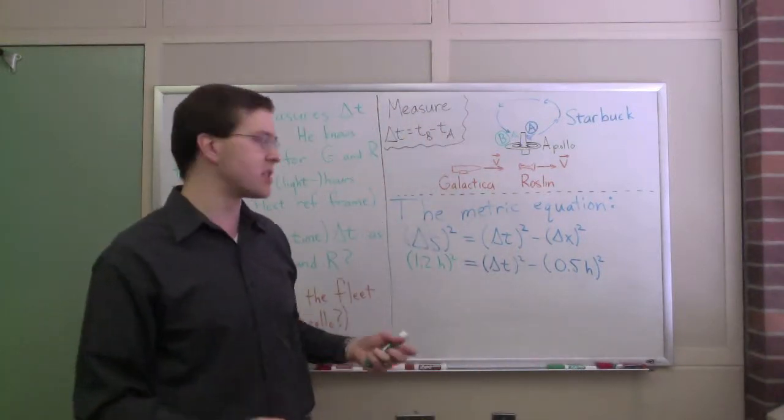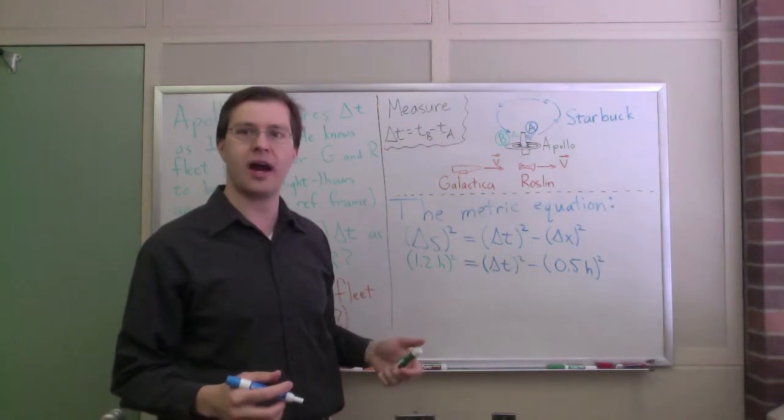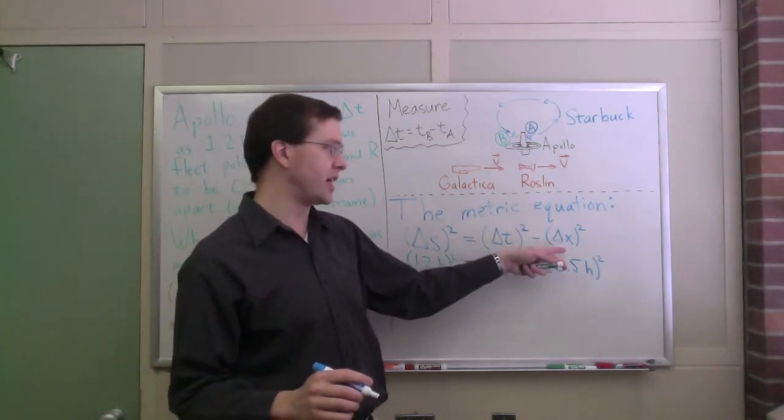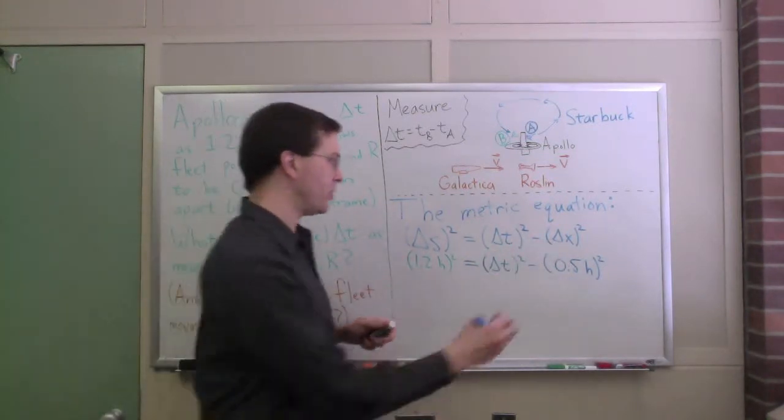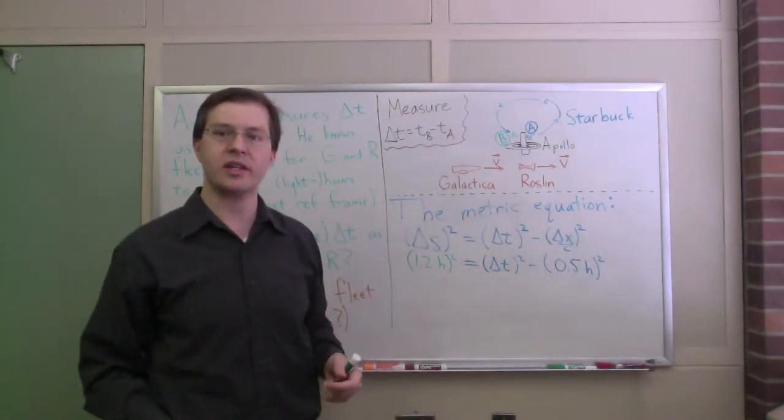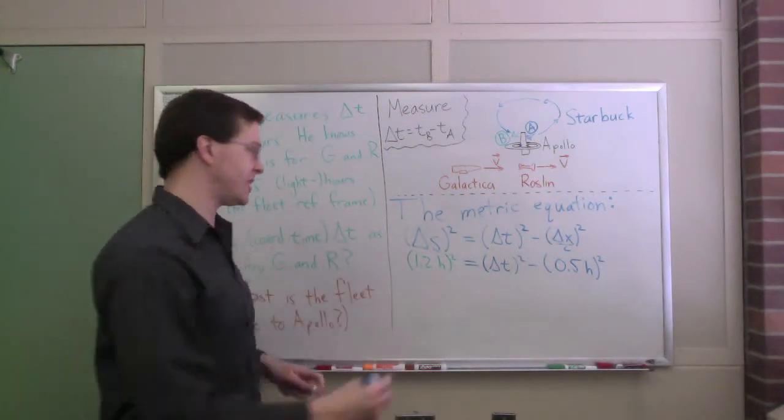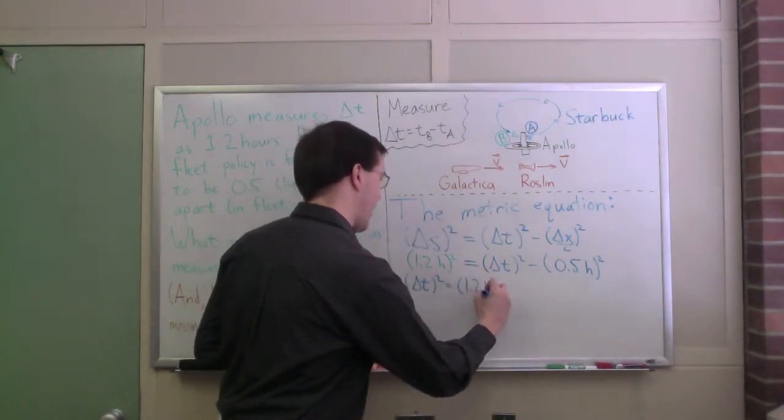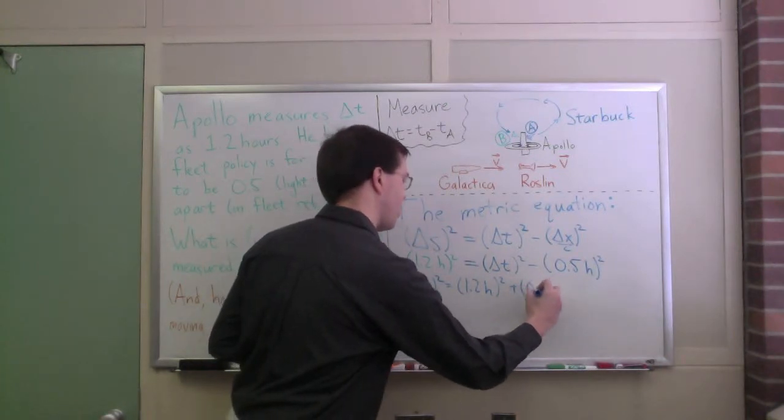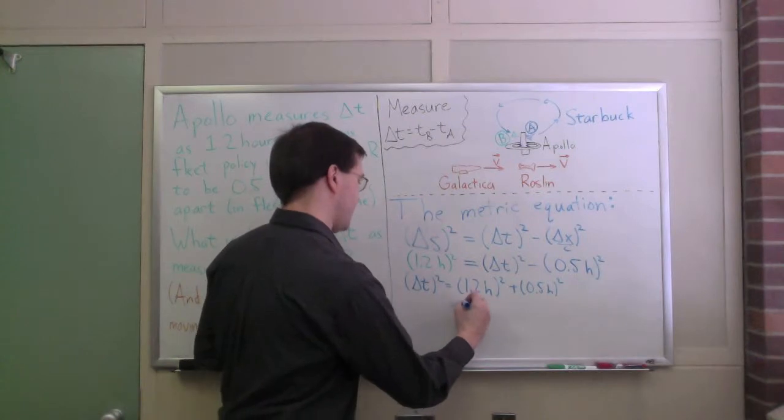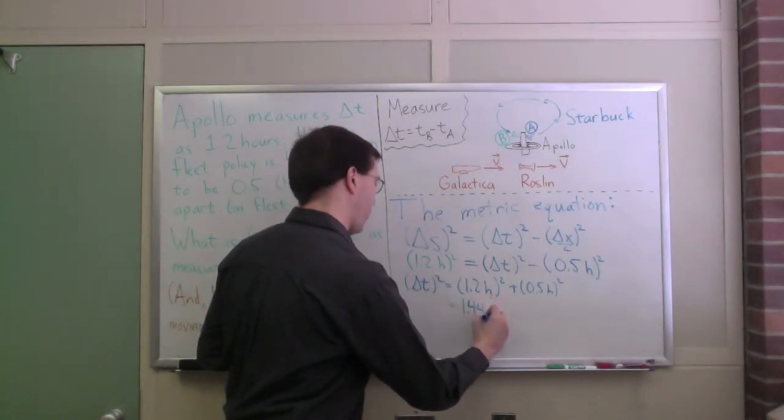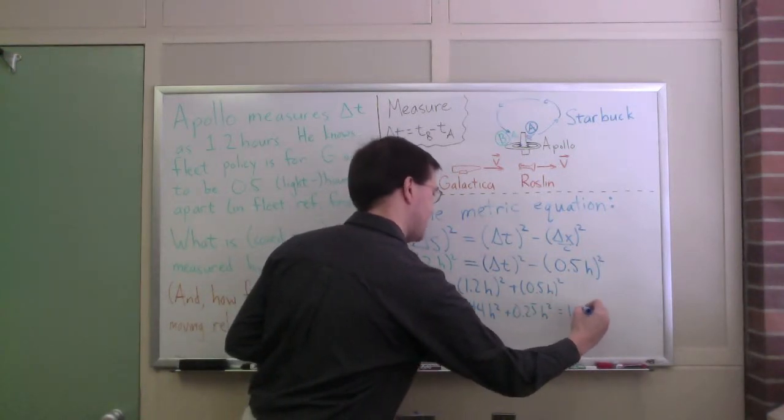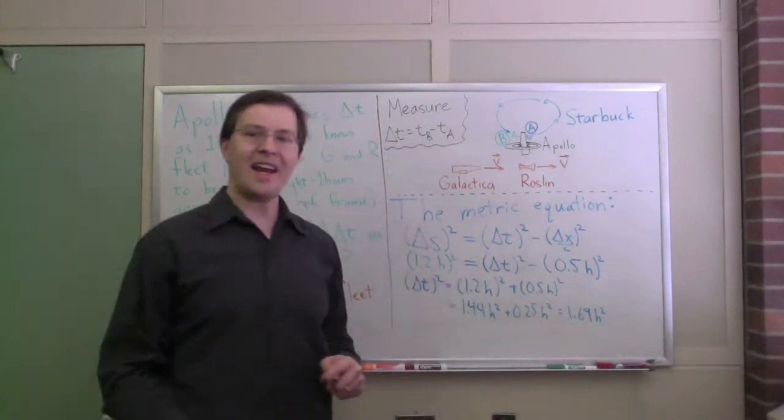Remember, we're using relativistic units where we measure distance in hours, or distance in units of time. So 0.5 light hours is just 0.5 hours in this equation. If you really want to, you could write down delta x divided by c here and get your units right. We could do a little delta x over c if we wanted to. But remember, in relativistic units, c is equal to 1. So okay, I can solve directly for delta t in the fleet's reference frame.